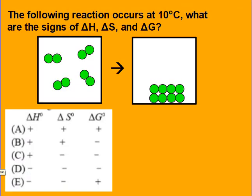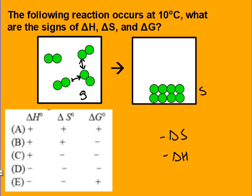Try this one. We went from a gas to a solid, so delta S should be negative because solids have less disorder — fewer microstates and less dispersion than a gas. For delta H, going from a gas to a solid means forming intermolecular forces between molecules — and since breaking intermolecular forces is endothermic, forming them is exothermic. The reaction is occurring at 10 degrees Celsius, so delta G must also be negative. The answer is D.